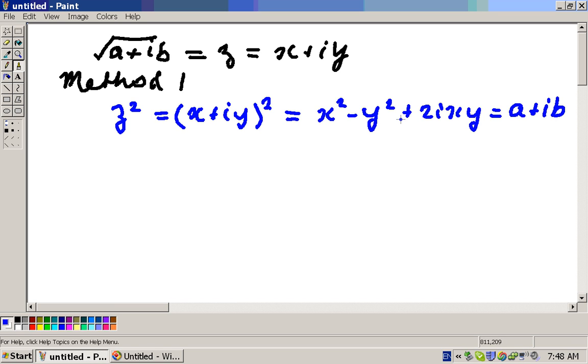So if this last equation here is true, then the real parts and the imaginary parts must be equal, so we'll write those down. So the real parts are X squared minus Y squared, and that's equal to A.